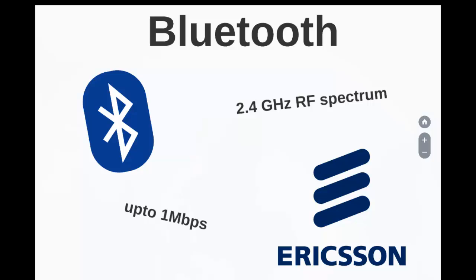Next we have Bluetooth, a low-cost, low-power, short-range wireless technology for data and voice communication. First proposed by Ericsson in 1994, it operates at 2.4 GHz of radio frequency spectrum. It supports a data rate of up to 1 Mbps and a range of approximately 30 feet for data communication.